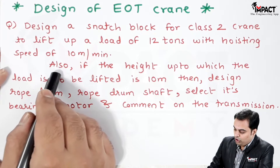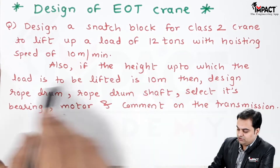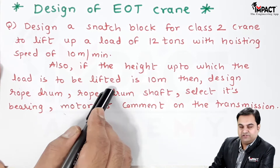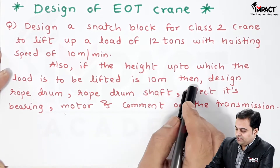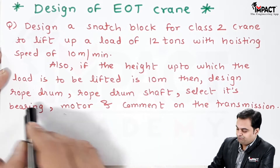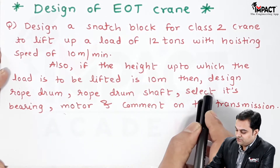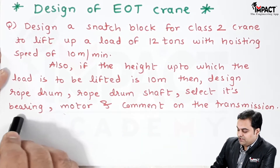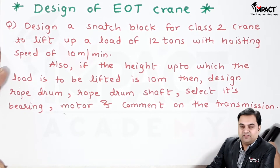Also, if the height up to which the load is to be lifted is 10 meters, then design the rope drum, the rope drum shaft, select its bearing and motor, and comment on the transmission.